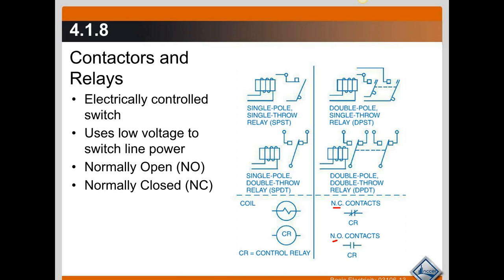The way a contactor and relay works — remember back with induction — when you have a coil of wire and electric current flowing through that wire, it creates a magnetic field. You have an iron core with wire wrapped around it. When you apply voltage and current goes through it, it creates a magnetic field and pulls the switch closed. If you disable power to the coil, a spring opens that contact back up. That is how those work.